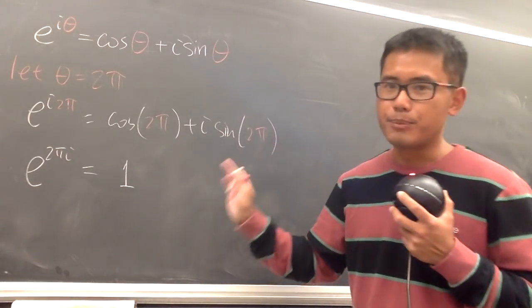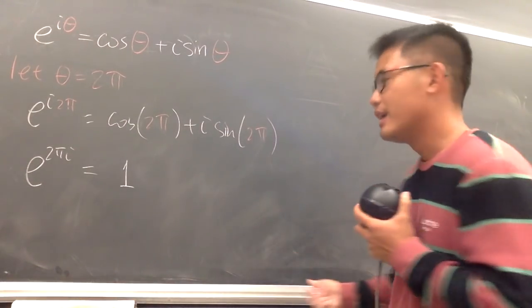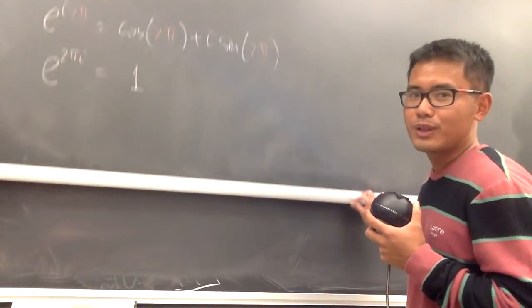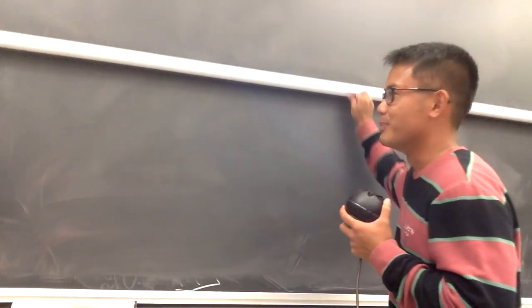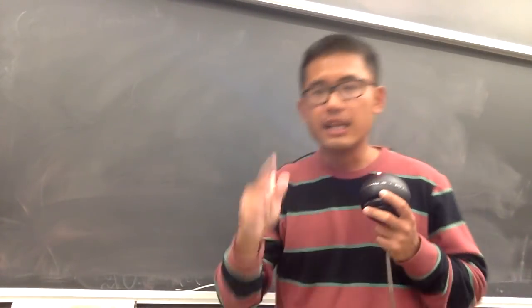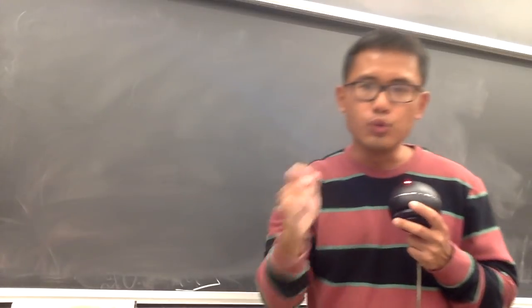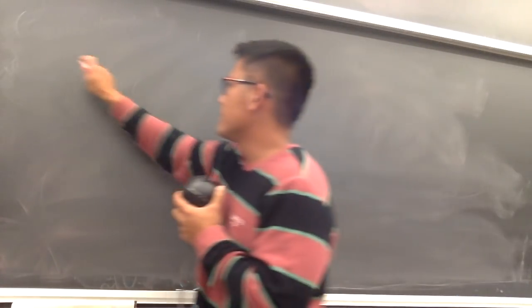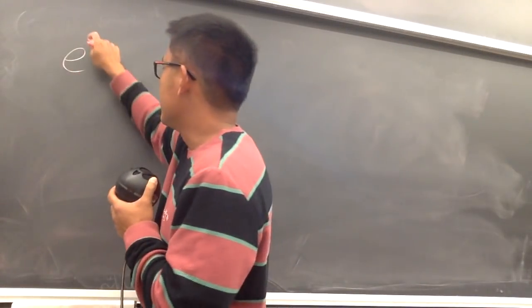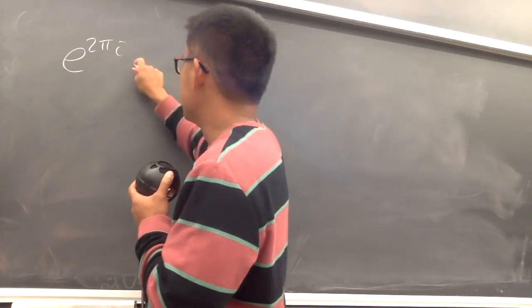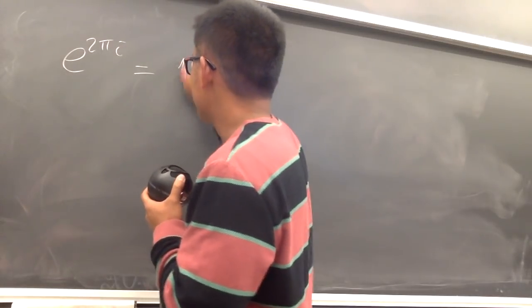So this is the prep work. And now, of course, you guys know what I want to do. I've shown you that e to the 2πi is equal to 1. Once again, e to the 2πi is equal to 1.